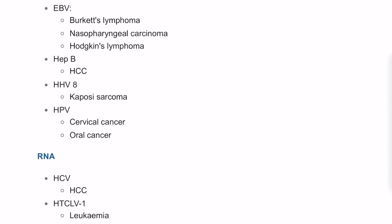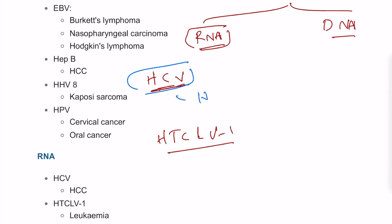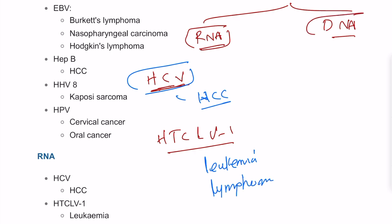Oncogenic viruses can be classified into RNA and DNA viruses. RNA oncogenic viruses include Hepatitis C virus, which can cause hepatocellular carcinoma, and Human T-cell Lymphoma Virus type 1 (HTLV-1), which can cause leukemia or lymphoma.